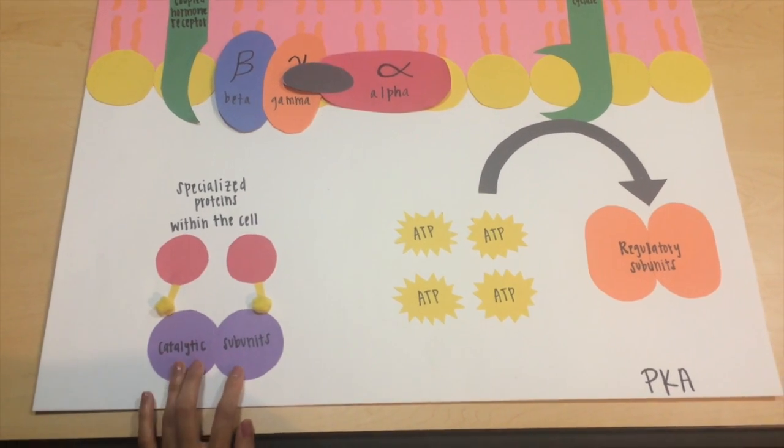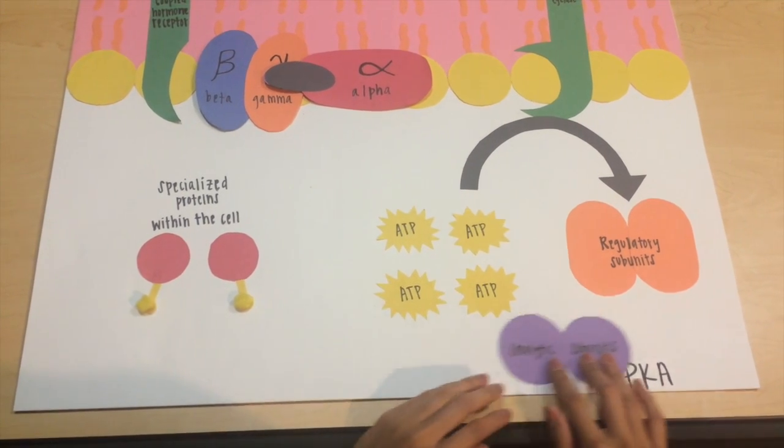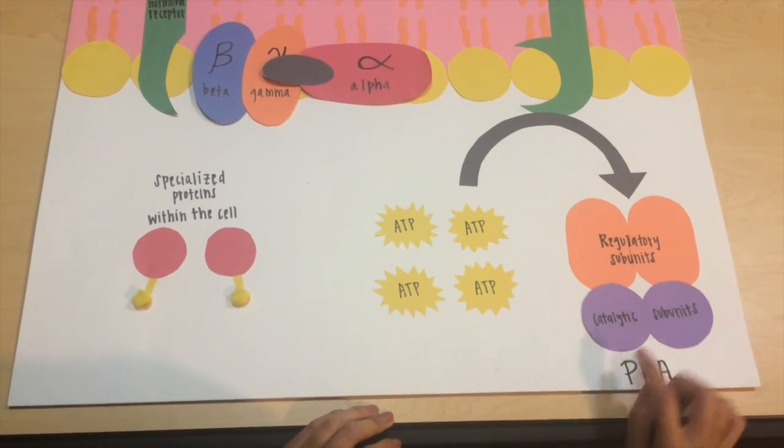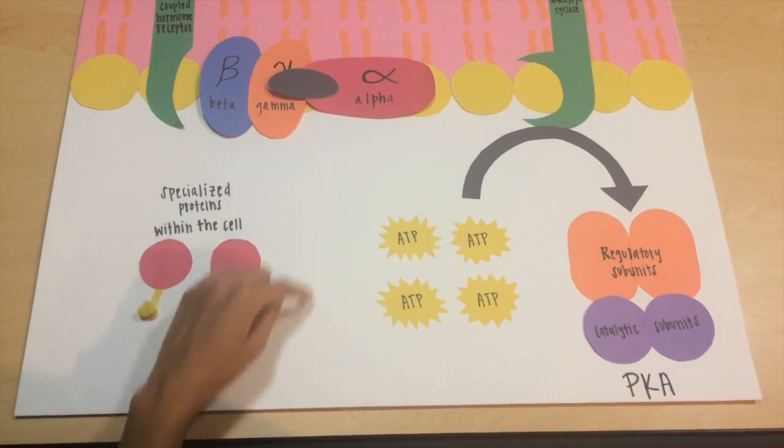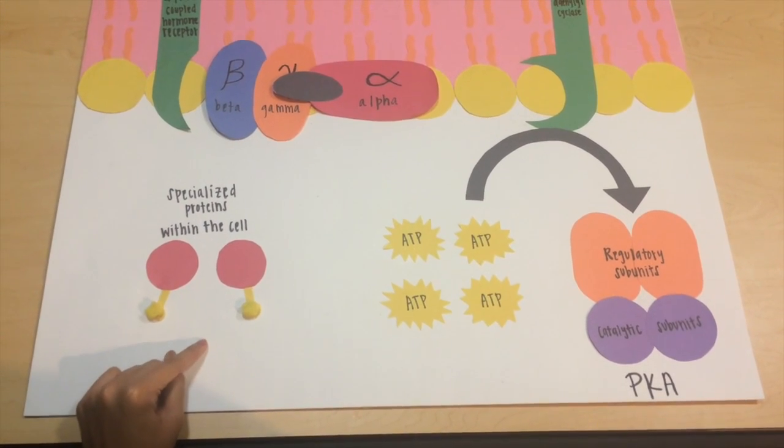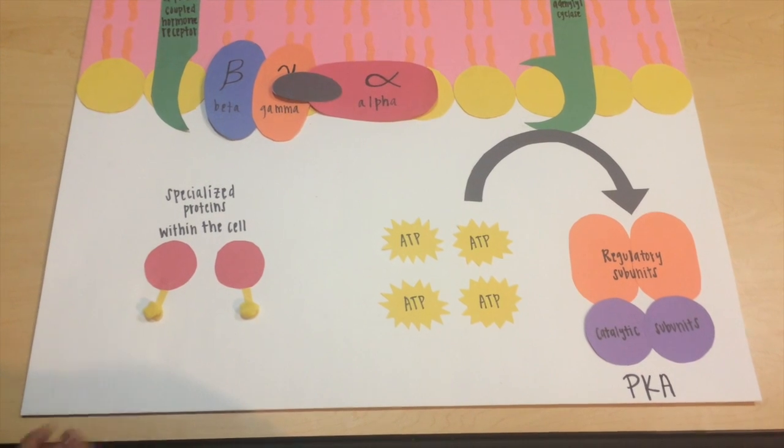The catalytic subunit reassociates with the regulatory subunit of protein kinase A. The proteins stop being phosphorylated and signal transduction from cell to cell stops occurring.